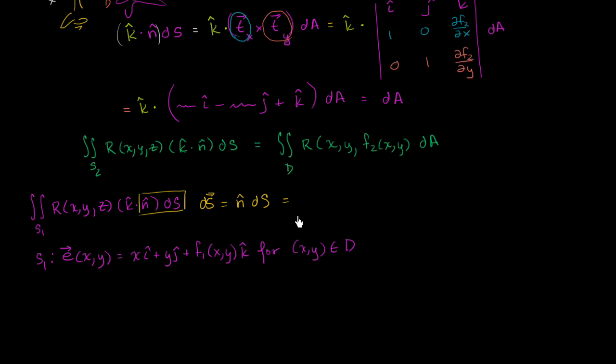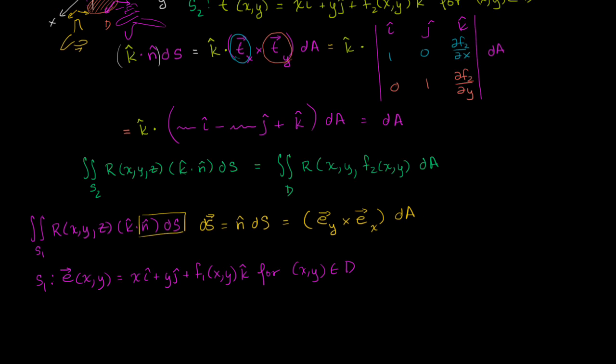But we want to make sure we get the order right. I'm going to claim that this is going to be the partial of our parameterization with respect to y, crossed with the partial of our parameterization with respect to x, and then we have times dA. But we need to make sure this has the right orientation, because for this bottom surface, remember, we need to be pointed straight down, outward from the region.